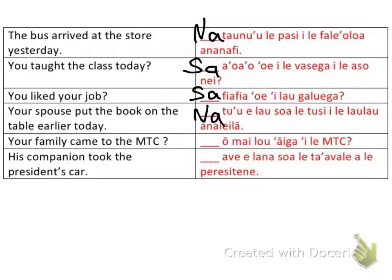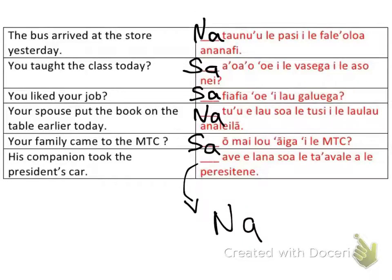Next: 'Your family came to the NTC.' It's clear this is in the past, but it's not clear when they came. So this would be 'sa.' Finally: 'His companion took the president's car.' I hope you were able to get that on your own. This is determinant — I can determine one specific moment in time and one specific car. So this is 'na': na ave e lao soa le tusi i le presteni.